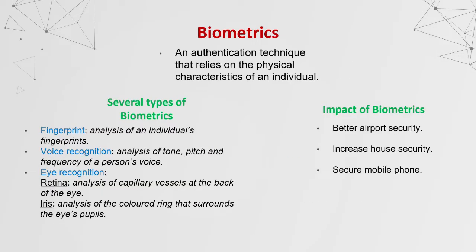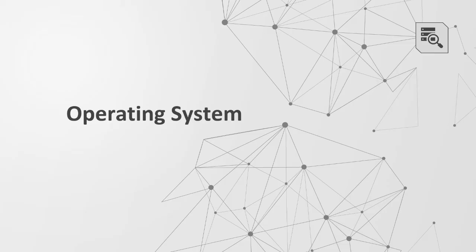Biometrics is an authentication technique that relies on the physical characteristics of an individual. There are several types of biometrics. First, fingerprint — the analysis of an individual's fingerprints. Second, voice recognition — the analysis of tone, pitch and frequency of a person's voice. Third, eye recognition — retina, which is analysis of capillary vessels at the back of the eye, and iris, which is analysis of the coloured ring that surrounds the eye. The impacts of biometrics include better airport security, increased home security and securing your mobile phone.